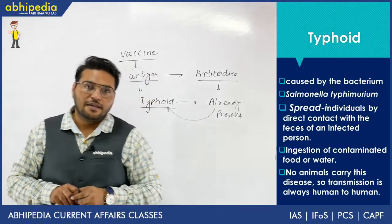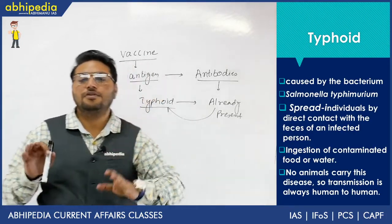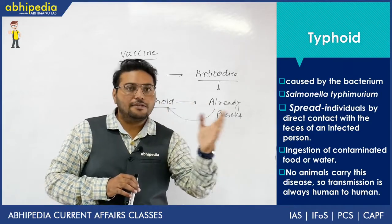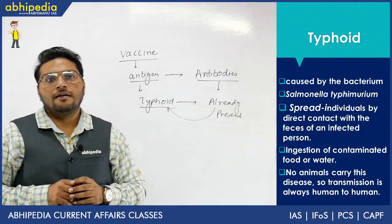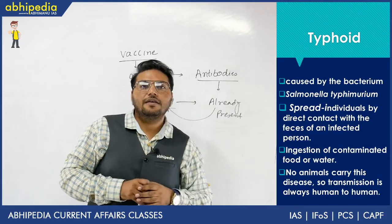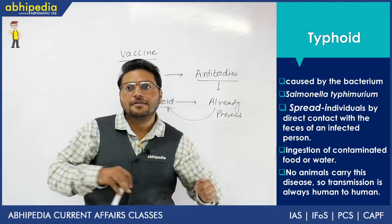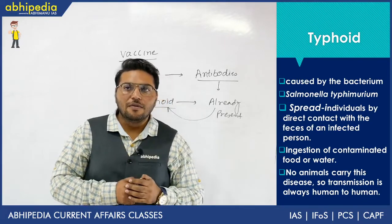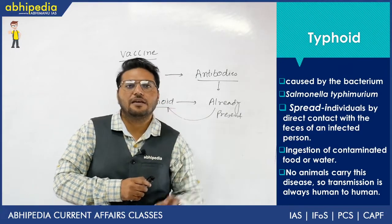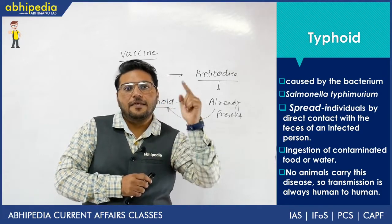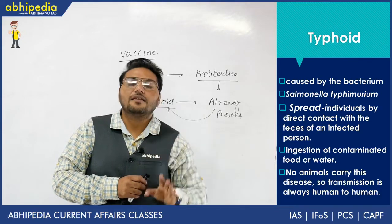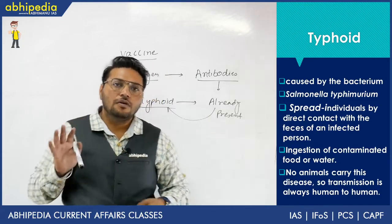Let's know a little about typhoid, because UPSC asks this. Typhoid is a bacterial disease — remember the difference between bacterial and viral diseases, as UPSC asks which disease is bacterial and which is viral. Typhoid spreads through individual direct contact, water, and food. Importantly, no animal carries this disease, so transmission is human to human. Key UPSC points: it is a bacterial disease, spreads through water and other means, and transmission is strictly human to human.